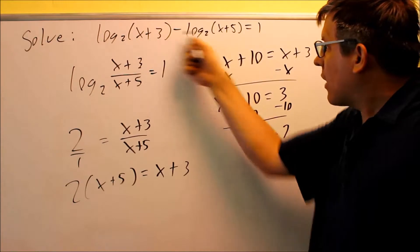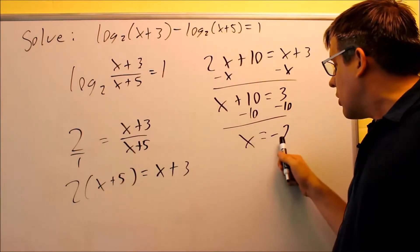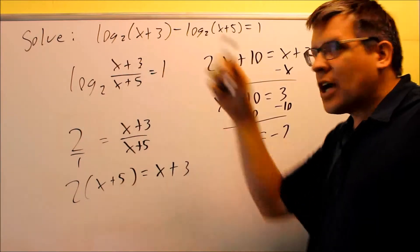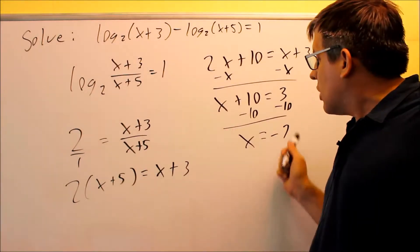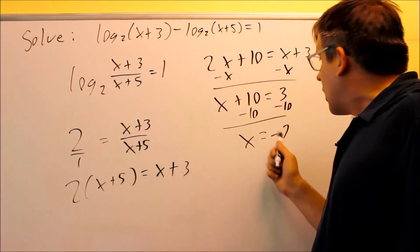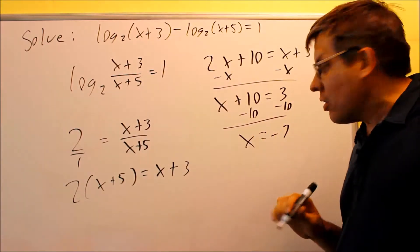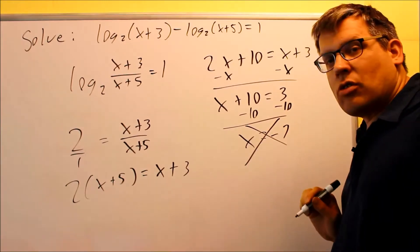We've got to put negative 7 back into the original one, and what we notice is when we put negative 7 into the original one, we get a negative number. So therefore, because we get a negative number inside the log, because negative 7 plus 3 is negative 4, that doesn't work. You can't take a log of a negative number. That means that this answer gets crossed out.